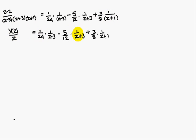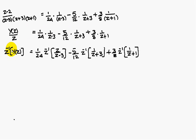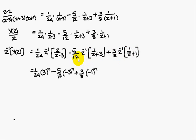Therefore Y(Z)/Z equals this expression, so Y(Z) equals (1/24)·Z/(Z minus 3) minus (5/12)·Z/(Z plus 3) plus (3/8)·Z/(Z plus 1). Applying Z-inverse: Z-inverse of Z/(Z minus 3) is 3ⁿ, Z-inverse of Z/(Z plus 3) is (minus 3)ⁿ, and Z-inverse of Z/(Z plus 1) is (minus 1)ⁿ. Therefore Yn equals (1/24)·3ⁿ minus (5/12)·(minus 3)ⁿ plus (3/8)·(minus 1)ⁿ.